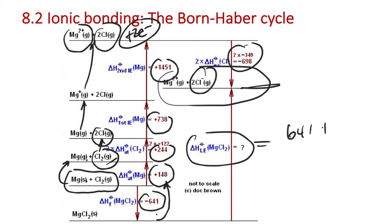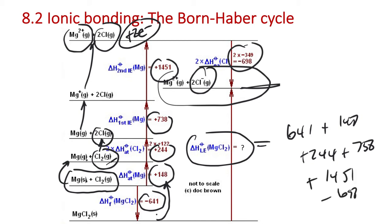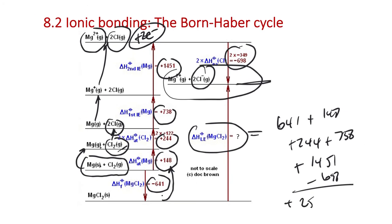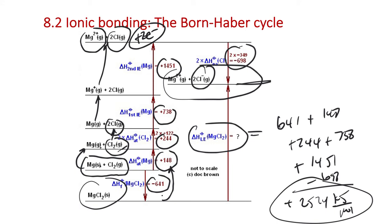To calculate the lattice energy, we take 641 positive, then add 148 and 244, 738, and 1451, then subtract two times the electron affinity. So 698 for the electron affinity, twice for chlorine. That gives us: 641 + 148 + 244 + 738 + 1451 − 698 = 2524 kJ per one mole of this compound.